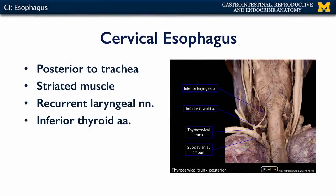Now let's take a look at each part of the esophagus in greater detail. Here we're looking at a posterior view of the pharynx as it transitions into the cervical part of the esophagus. That cervical part is largely striated or skeletal muscle under control of the recurrent laryngeal nerves, which are branches of the vagus. The first part of the subclavian artery gives rise to the thyrocervical trunk, which has a branch called the inferior thyroid artery, and those inferior thyroid arteries supply the cervical esophagus with blood.